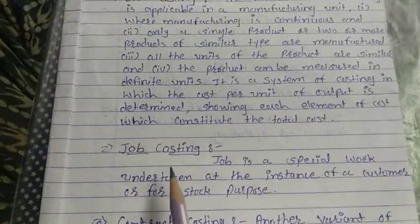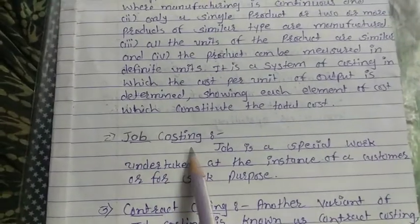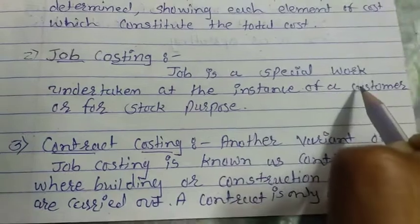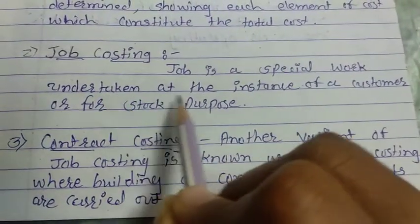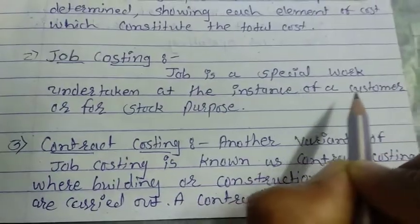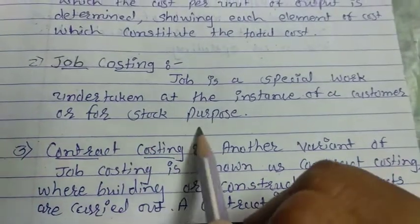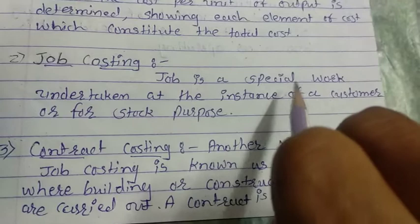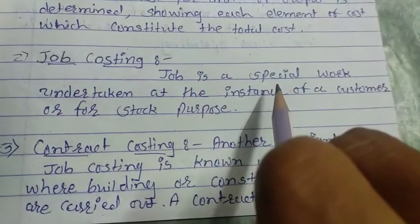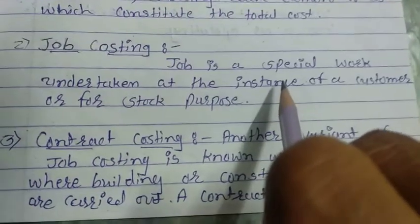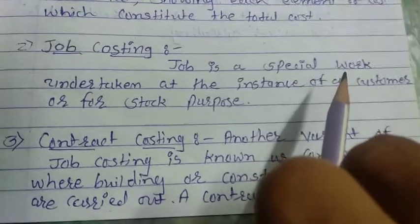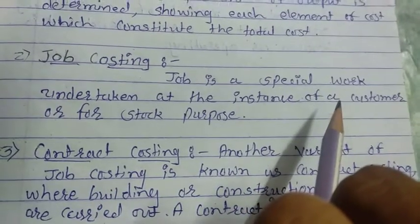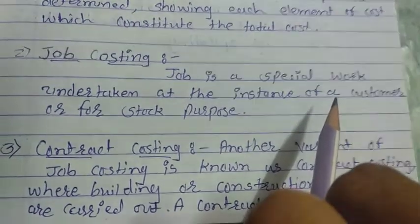Then we have job costing. A job is a special work undertaken at the instance of a customer or for stock purposes. Small orders from customers are handled using this method, which is called job costing.